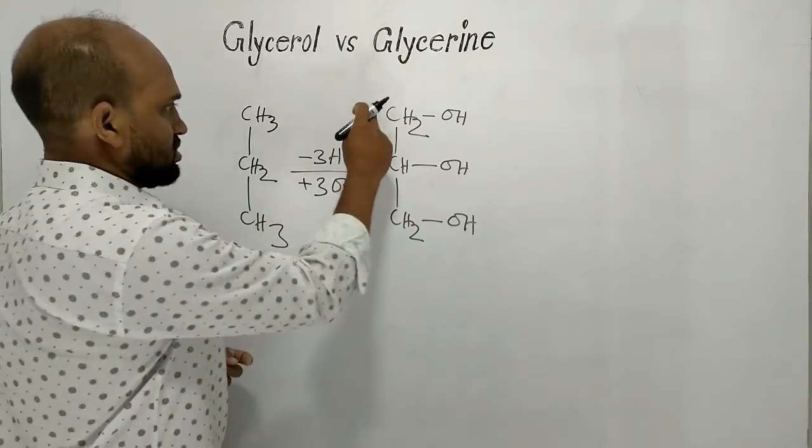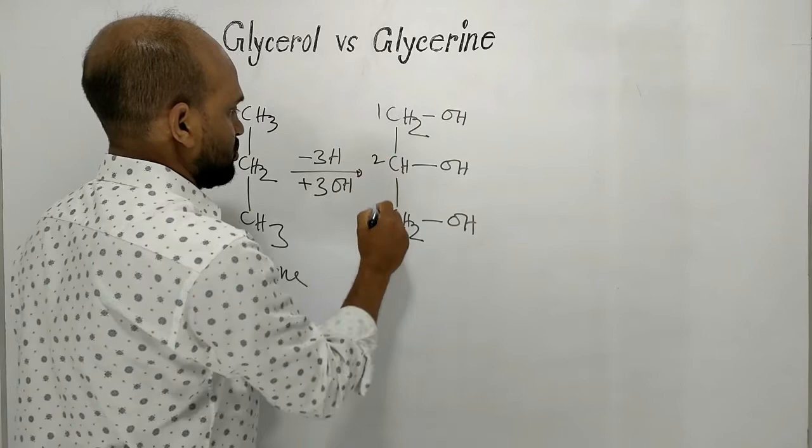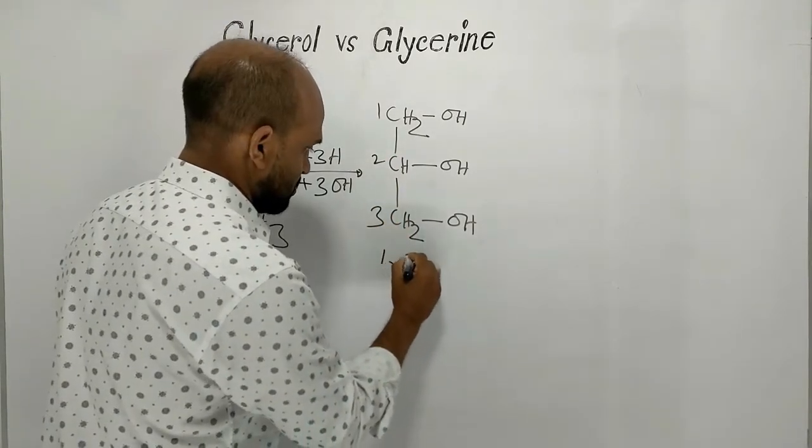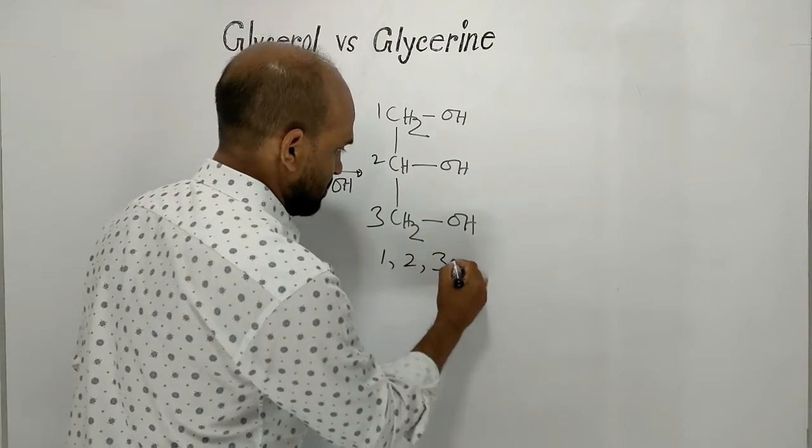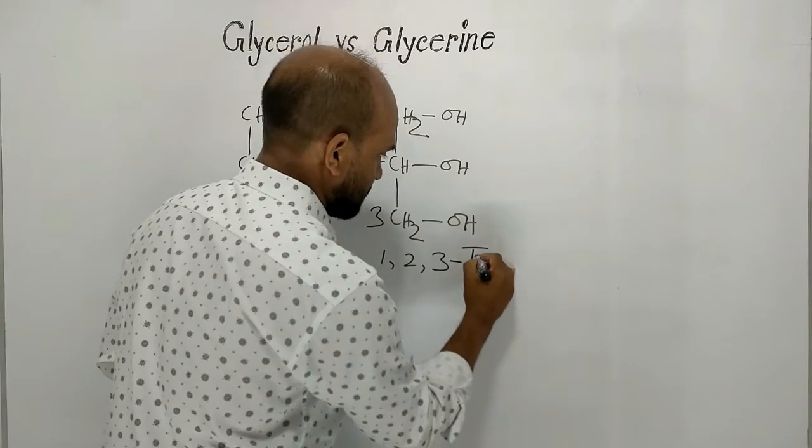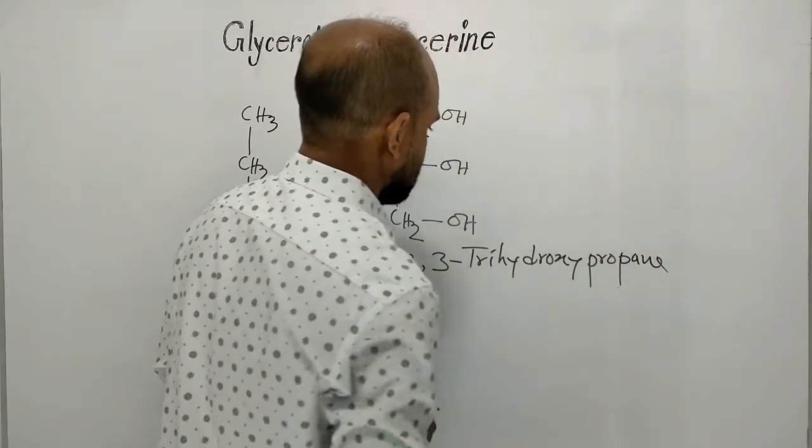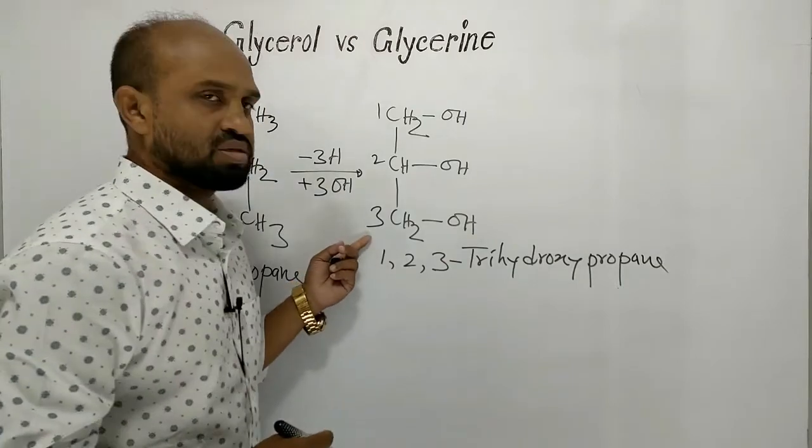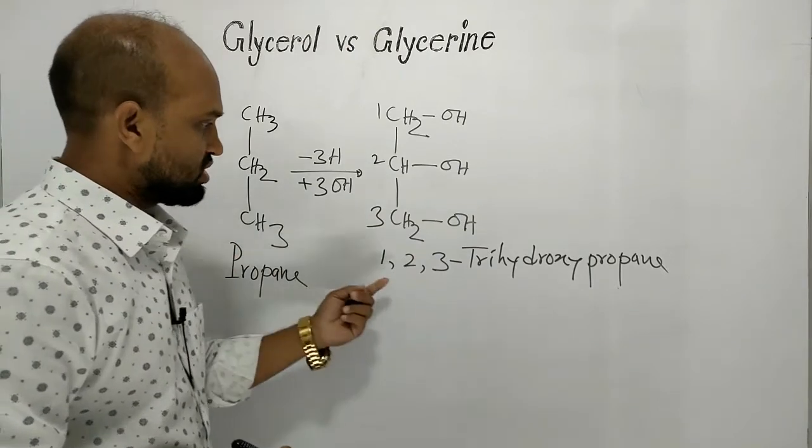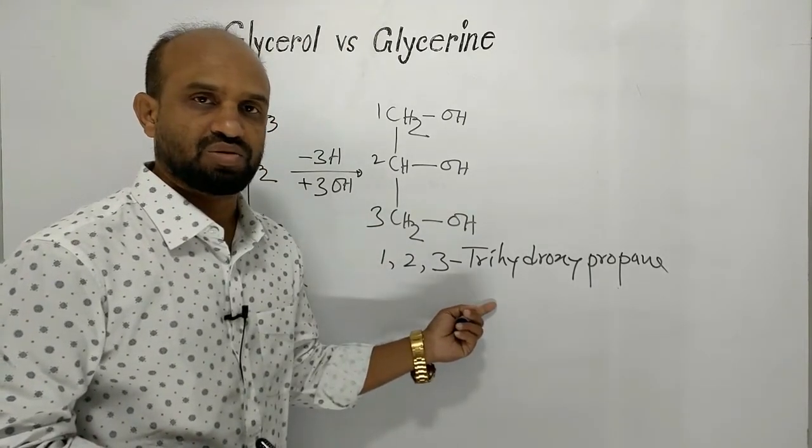First of all the carbon atoms are numbered 1, 2, 3. Now its name is 1, 2, 3-trihydroxy propane. This compound is considered as derivative of this compound. That is why its name is 1, 2, 3-trihydroxy propane.